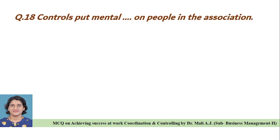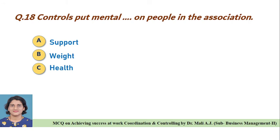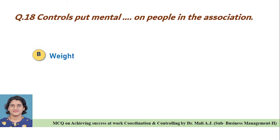Question eighteen: Controls put mental dash on people in the association — Option A: support, Option B: weight, Option C: health, Option D: none of these. Correct answer is Option B, controls put mental weight on people in the association.